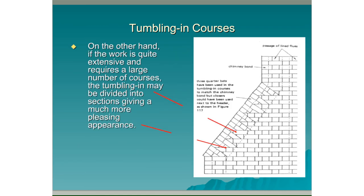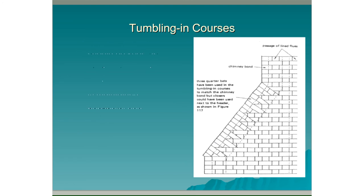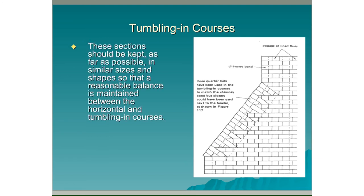On the other hand, if the wall is quite extensive and requires a large number of courses, the tumbling in may be divided into sections, giving a much more pleasing appearance. These sections should be kept as far as possible in similar sizes and shapes so that a reasonable balance is maintained between the horizontal and tumbling in courses.